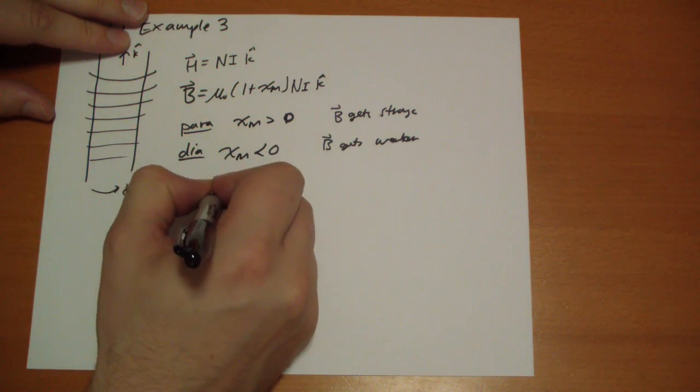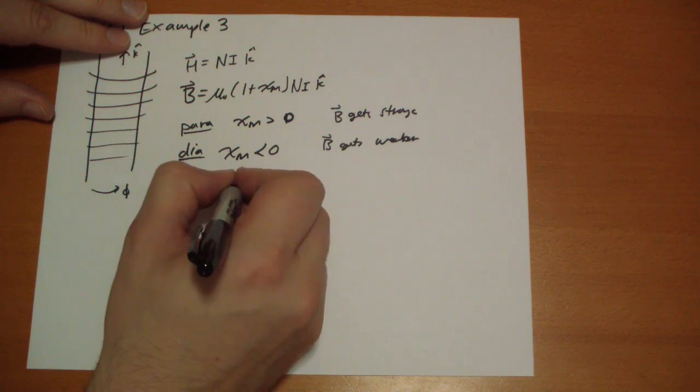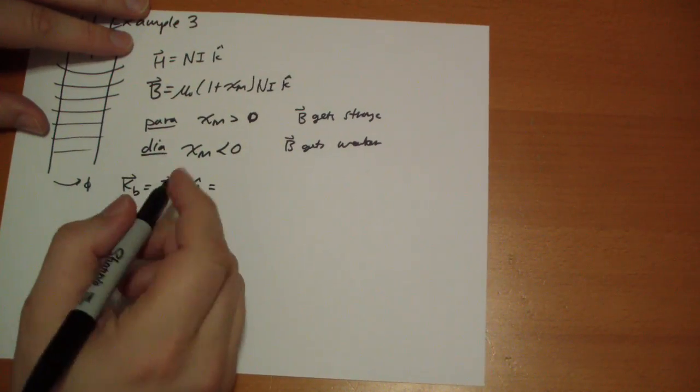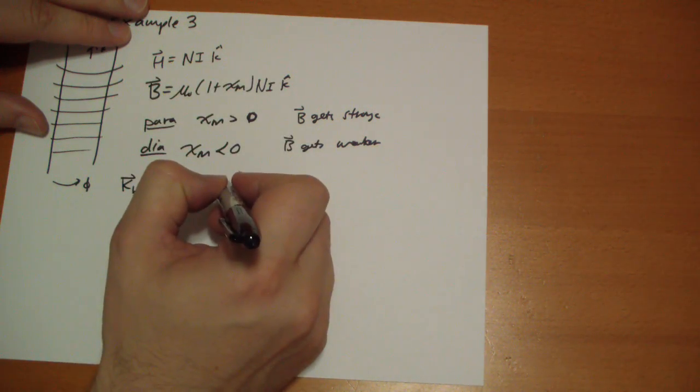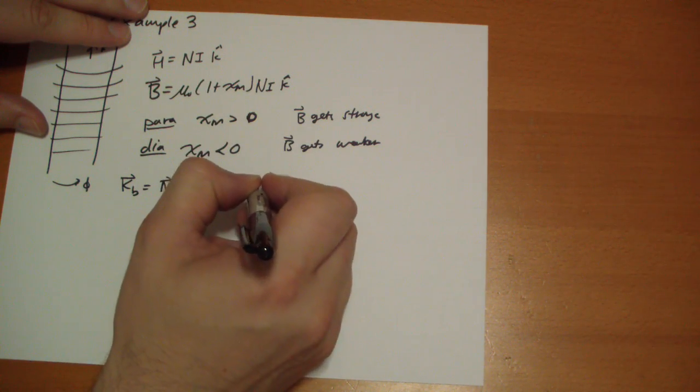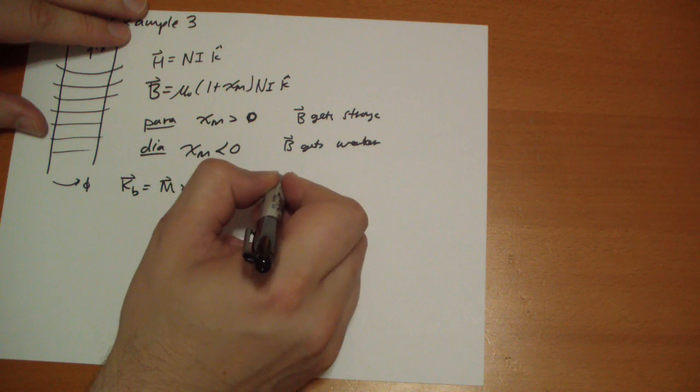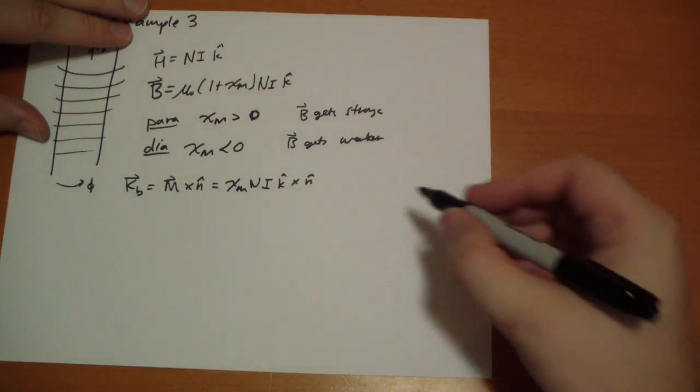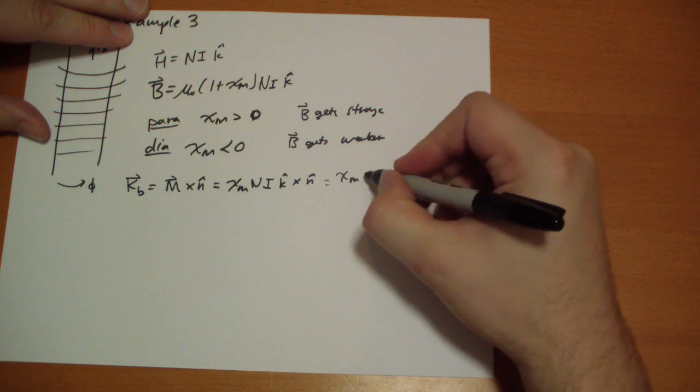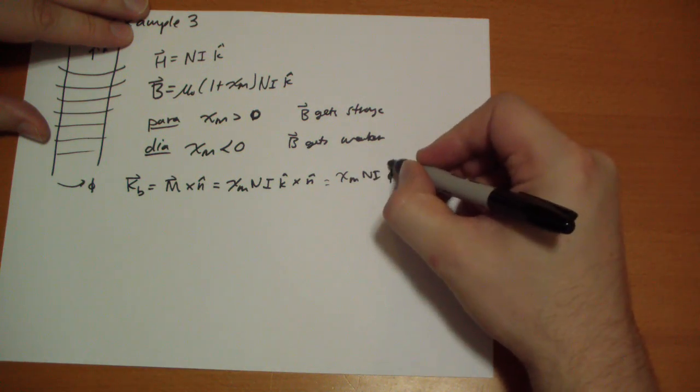That's just the magnetization cross the n hat. And what's the magnetization? That's just chi m times H. So we have chi m n i k hat cross the normal vector, and that'll just give us chi m n i in the phi hat direction.